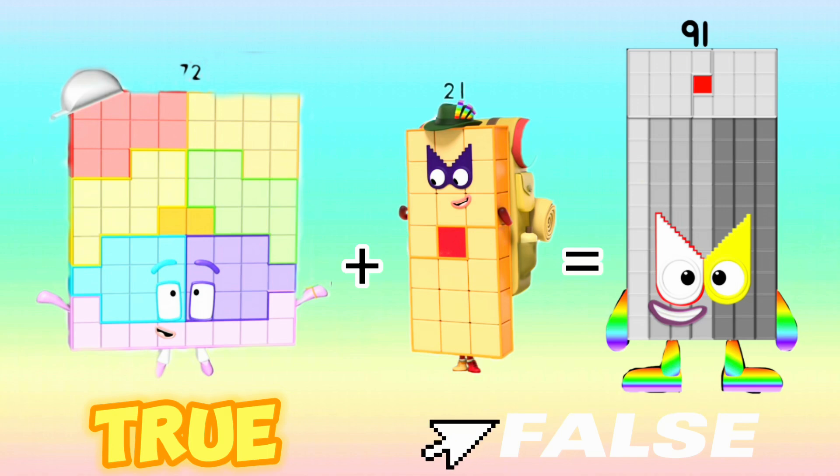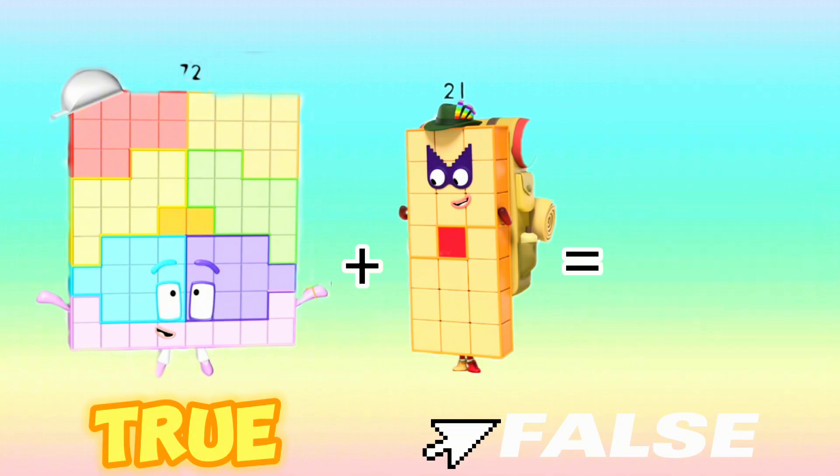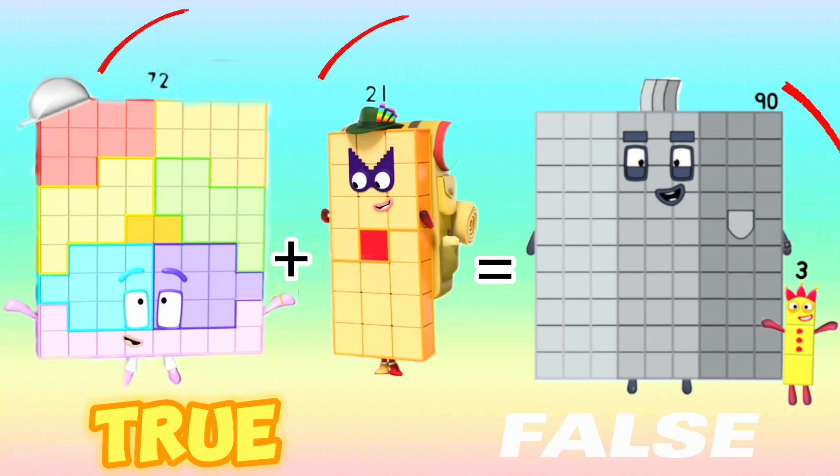The correct answer is false. 72 plus 21 is not equal to 91. Therefore, the correct answer is 72 plus 21 is equals to 93.